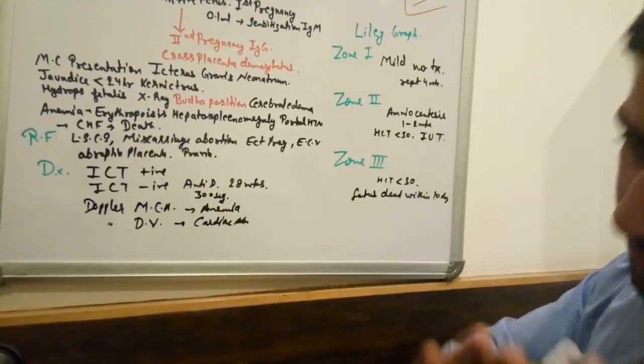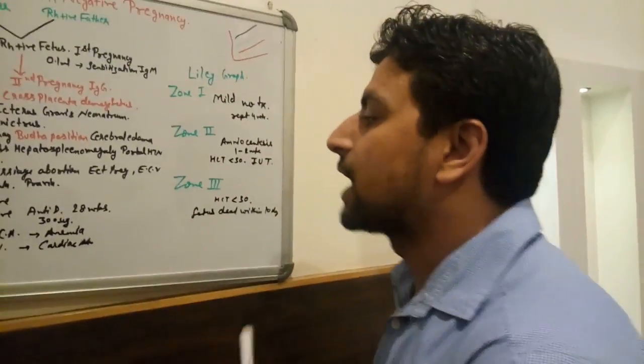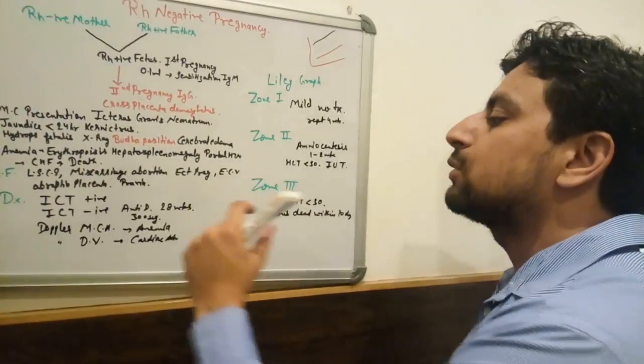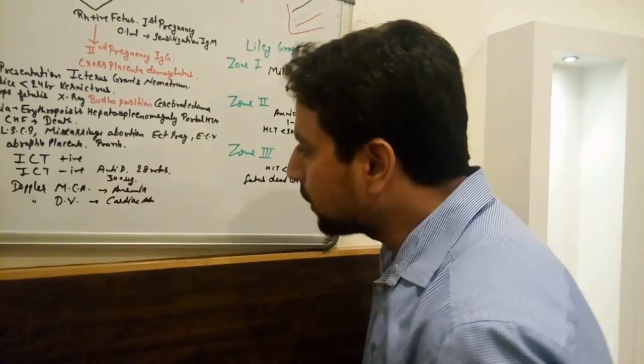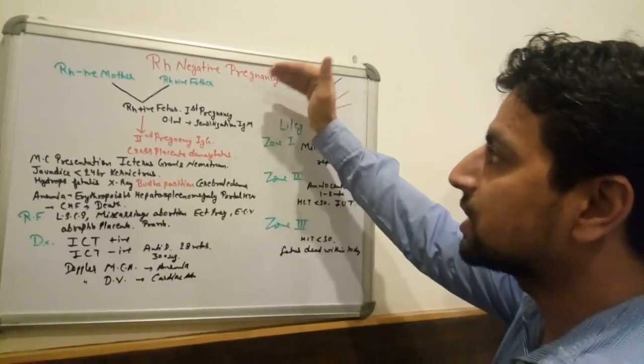Anti-D we are giving only when the indirect Coombs test is negative, so simple answer. Sometimes they ask when we need to give anti-D - at 28 weeks. What was the dose of anti-D? It's 300 micrograms.